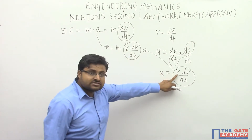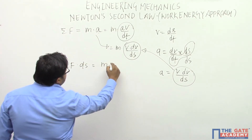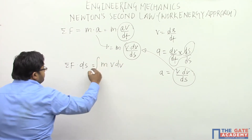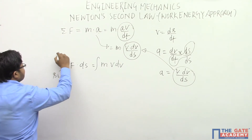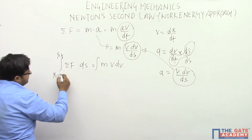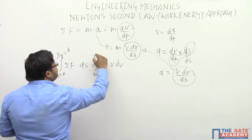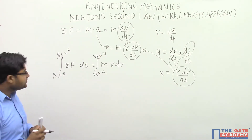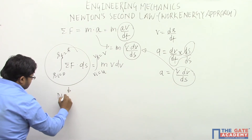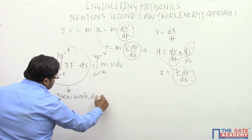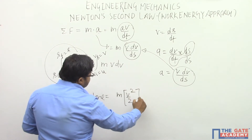Mass into acceleration: instead of acceleration we write v·dv/ds. This equation becomes net force times ds equals mass times velocity dv. To find it for a rigid body, we integrate this. Displacement goes from initial to final (assuming initial displacement zero and final displacement s), and velocity goes from initial velocity u to final velocity v. Integrating, the left side becomes net work done, and the right side becomes mass times v²/2 evaluated from u to v.